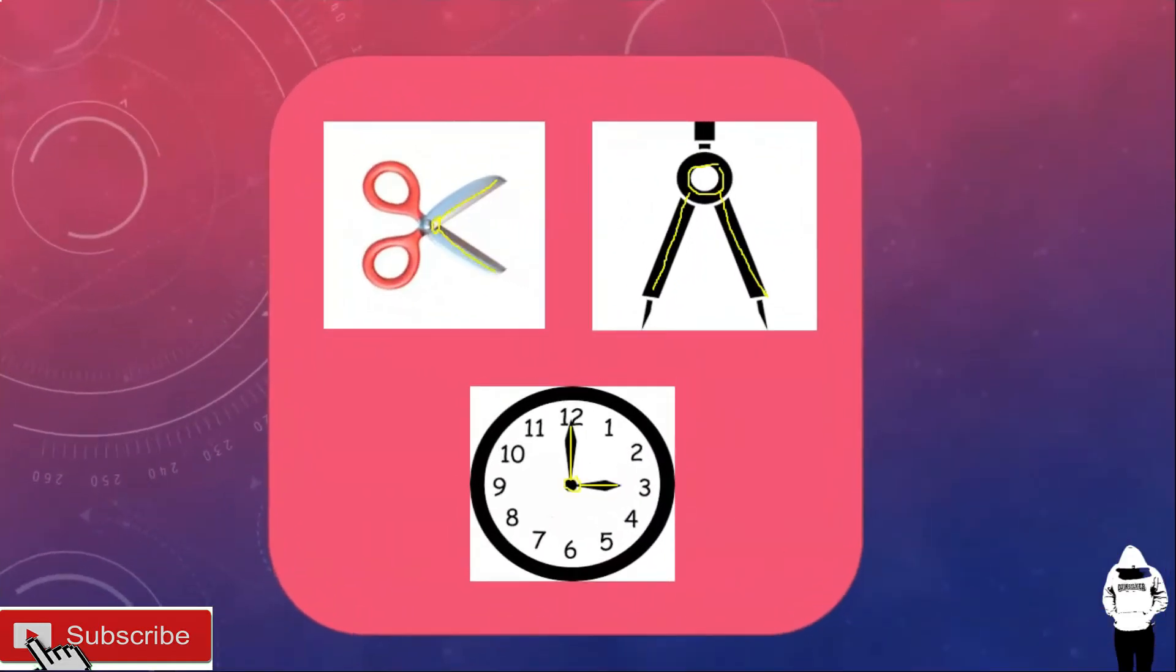Let us study the figure. Each of these figures represent an angle. As you've noticed, that each figure is formed by two rays with a common endpoint, just like the scissor, compass, and the hands of the clock.